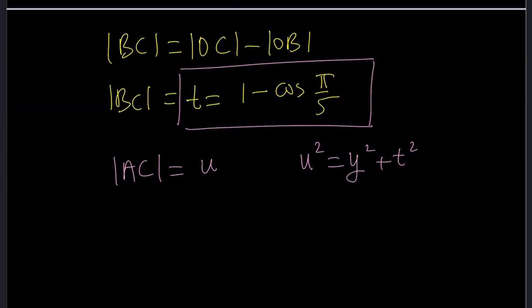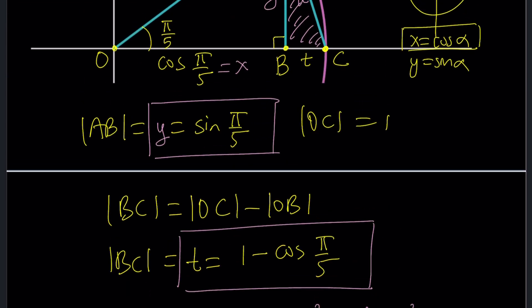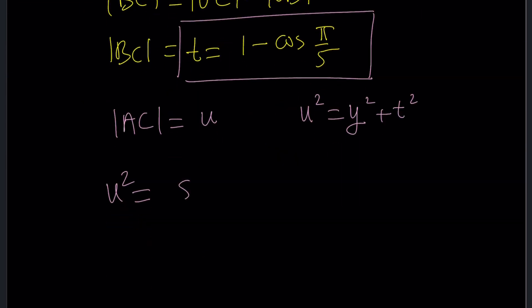So this will be y². I was able to erase the H only. Cool. Now we know U² equals that. Let's go ahead and plug it in. What is U²? y². y is sin(π/5). So sin²(π/5) + T². And T is 1 minus cos(π/5). Interesting, right?